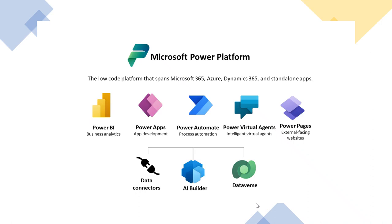A canvas application is where you have full control over the components on the screen. You simply drag and drop your components anywhere on the screen, and when you run the application, each component appears exactly where you placed it.